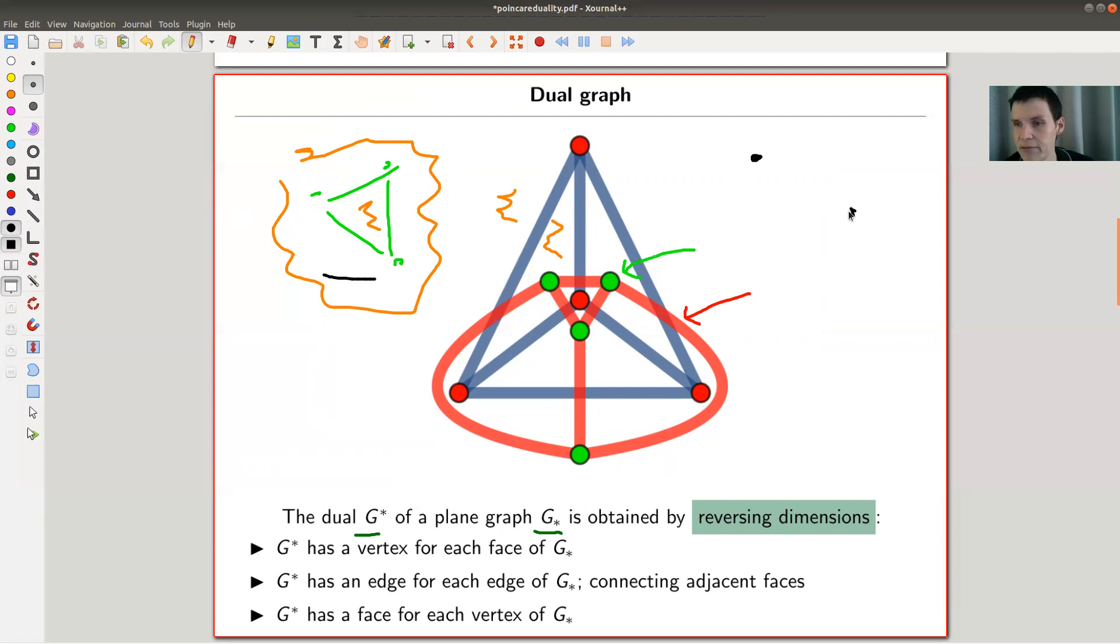So let me do another example. Here is my little graph, and what I want is that my new graph has two vertices, because I see two faces here, and three edges, because I see three edges here, and three faces, because I see three vertices here. And the way I do it is the following: I mark each face with a vertex, so each face now becomes a vertex, and I connect them over edges. So I connect them here, I connect them here, and I connect them here. And as you can see now, each vertex corresponds to a region, namely the region where it sits in, so this vertex sits in the outside region, and so on.